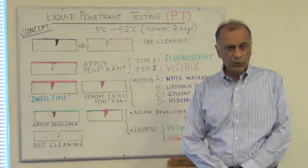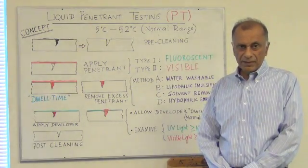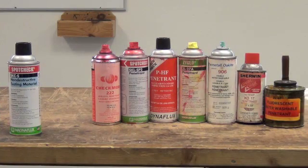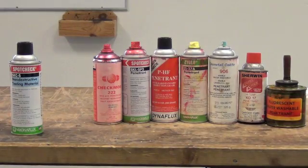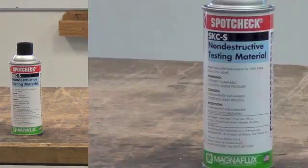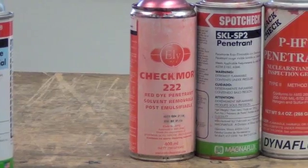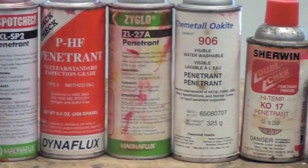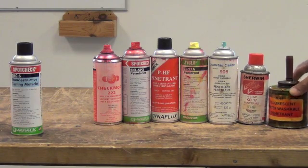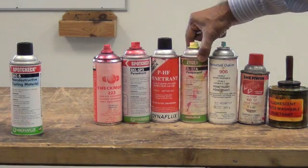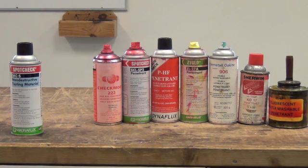Now I will show you the penetrant materials used for this inspection. The 3 main items for liquid penetrant testing are cleaner, penetrant, and developer. Here is one of the cleaners, and there are a number of liquid penetrants with different brands from different companies — some of them are visible penetrants, some are fluorescent, and one here is an emulsifier penetrant.